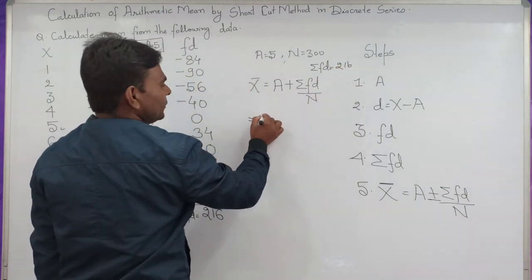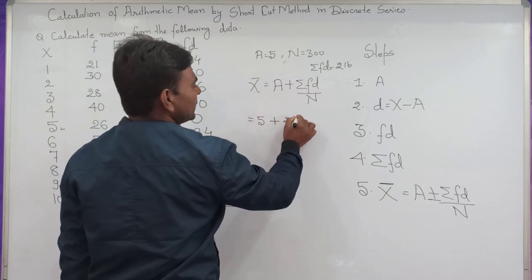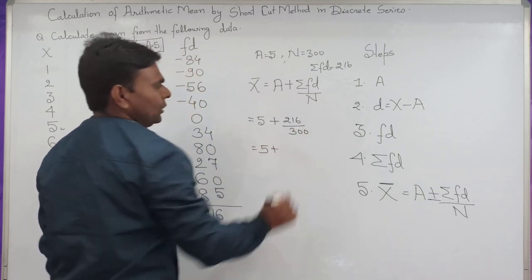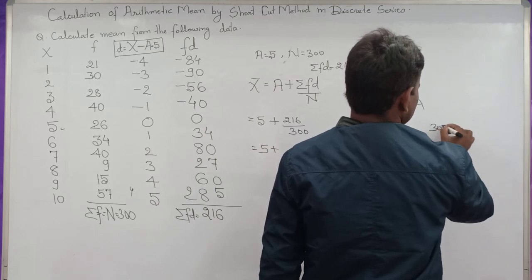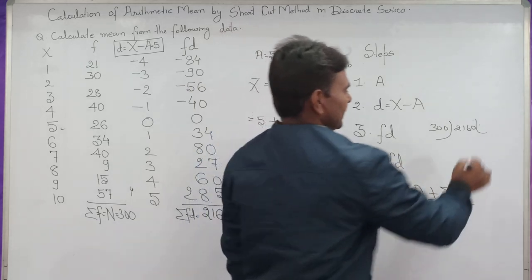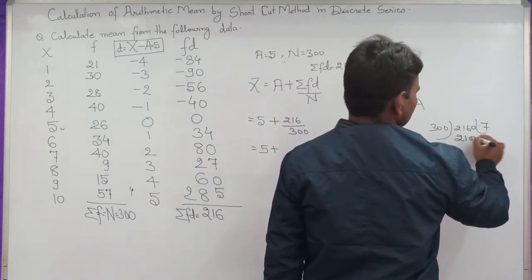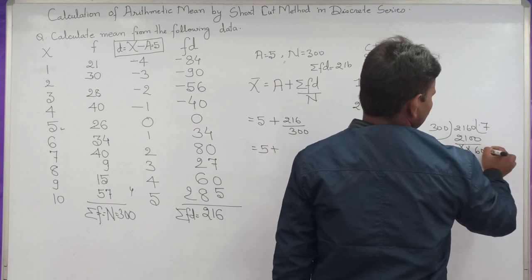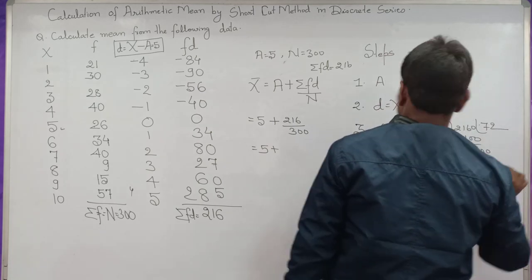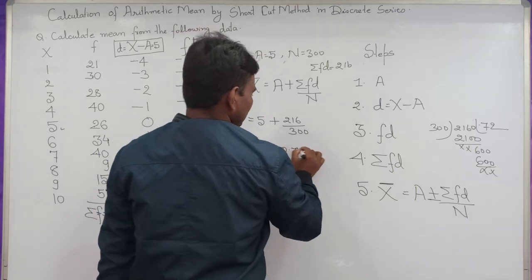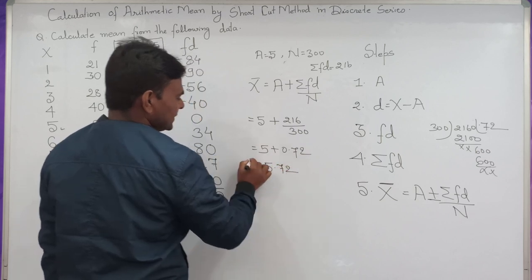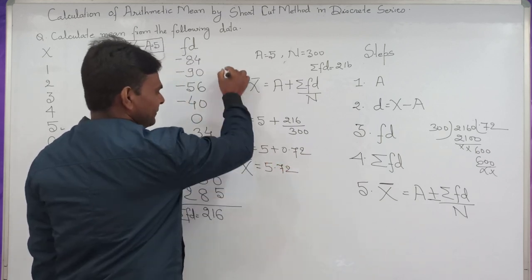Substituting these values: mean equals 5 plus 260 divided by 300. Dividing 260 by 300 gives 0.72. So 5 plus 0.72 equals 5.72. This is the arithmetic mean, simply the mean.